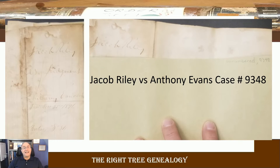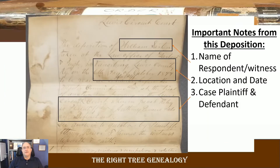The case turned out to be Jacob Riley versus Anthony Evans. I'm only going to focus on what is important to this paper trail and genealogical answer. The case dates to around November 25th, 1876, and the deposition I'm focusing on is from 1877. You can get important information from depositions in a court case — these are original records. William Sarton gave a deposition in Vanceburg, Lewis County, on October 6th, 1877, in that particular case.